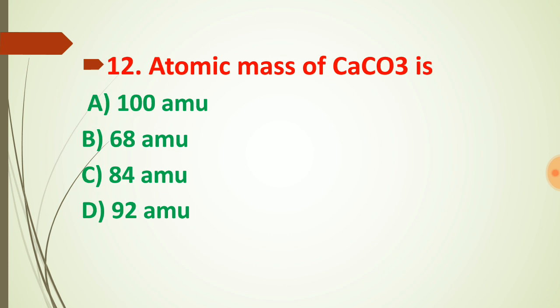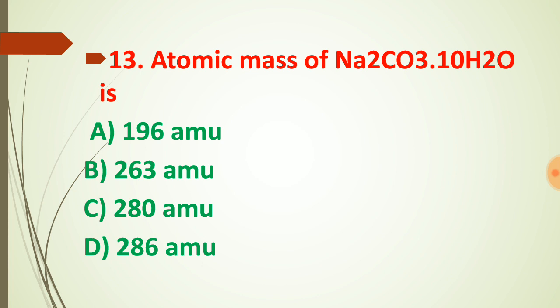Question number twelve: atomic mass of CaCO₃. We add the atomic mass of calcium (40), carbon (12), and O₃ — since one oxygen has mass 16, three oxygens have mass 48. Adding 48 + 12 + 40 gives 100 AMU. So the atomic mass of CaCO₃ is 100 AMU.